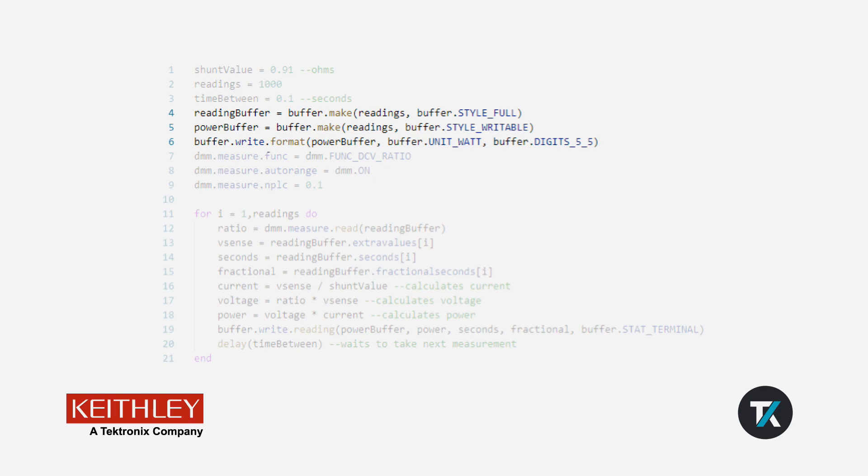Next, we'll change our function to ratio, our range to auto, and our nplc to 0.1.